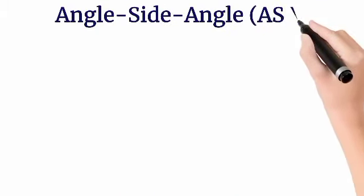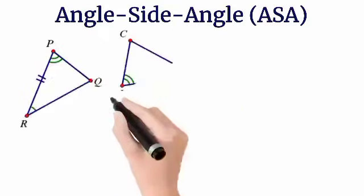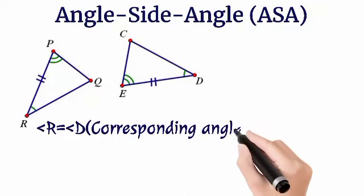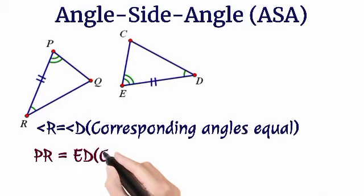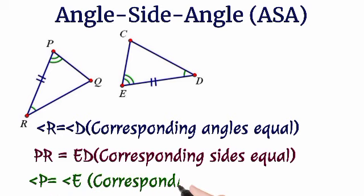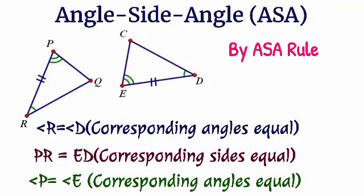Now the next rule is Angle-Side-Angle, which we will call in short ASA. So we can see from the name itself that one triangle's two angles and one side should be equal to the second triangle's two angles and one side. So now we see their correspondence - which corresponds to which. So angle R, I saw, corresponds to angle D, because both have one curve. Then I saw PR and side ED - side is written with two letters. These are equal. Both have two slashes. Then angle P and angle E - both have two curves. Both the angles are equal. So these are the corresponding parts.